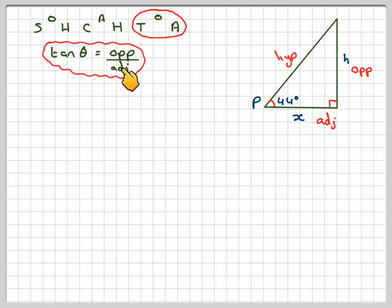Tan theta is the opposite over adjacent. Always a good idea to write out formally because it commits it to memory. So we have that tan of 44 degrees is h over x, and we'll just make x the subject. So x will be h over tan 44.